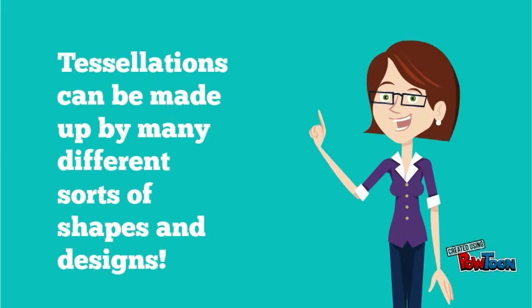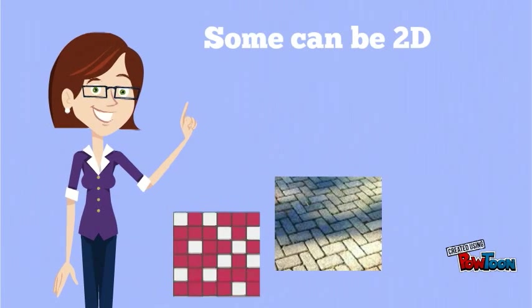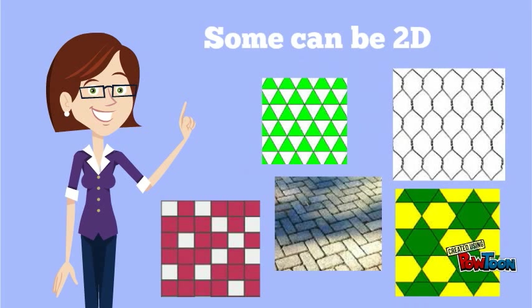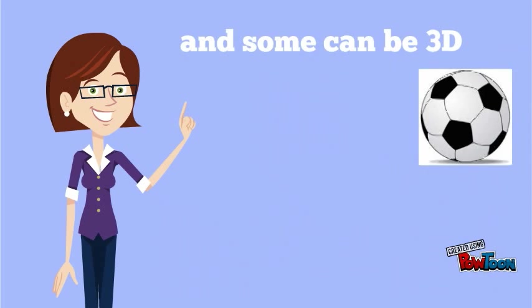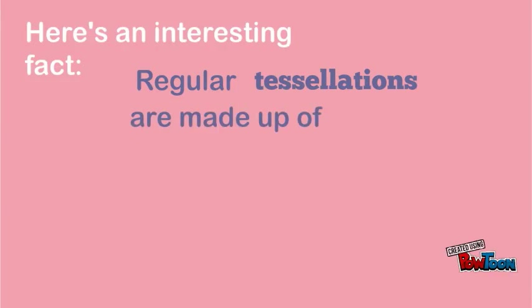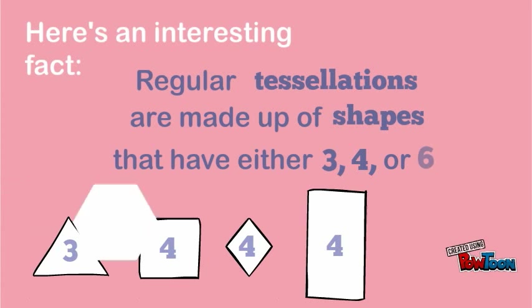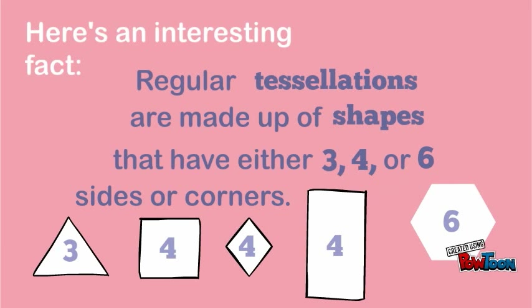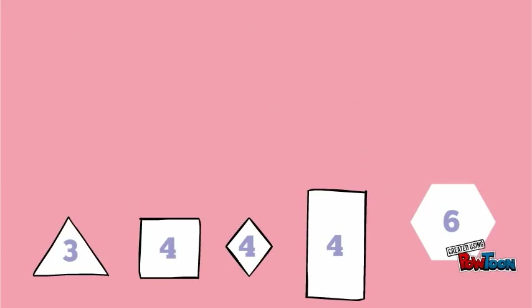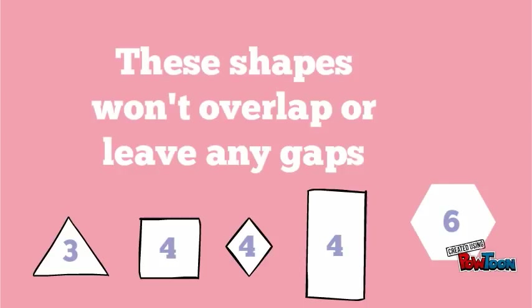Tessellations can be made up of many different sorts of shapes and designs. Some can be 2D and some can be 3D. Here's an interesting fact: regular tessellations are made up of shapes that have either 3, 4, or 6 sides or corners. These shapes won't overlap or leave any gaps.